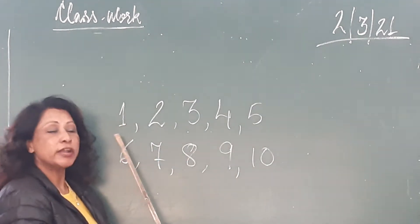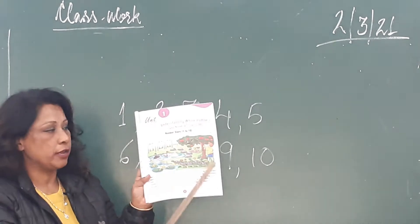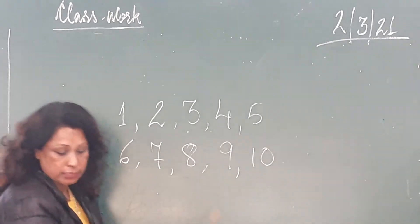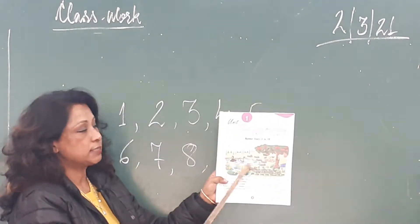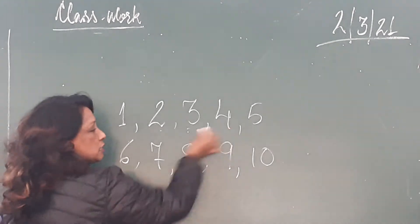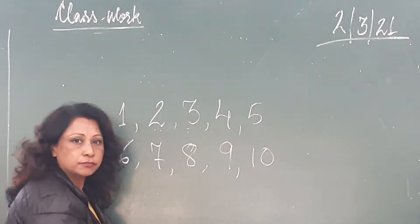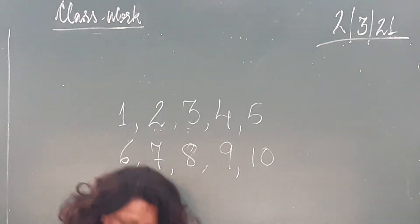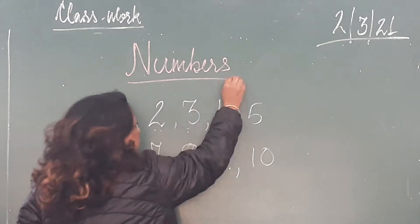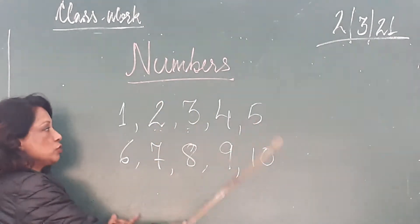Why did I show you this picture and tell you this story? Because I counted all the things — I counted the swings, the ducks, the apples, the butterflies, the frogs — and I wrote one, two, three, four, five, six, seven, eight, nine, ten. What are they called? They are called numbers!